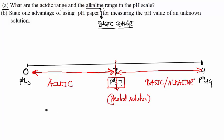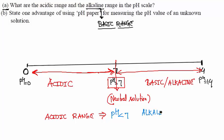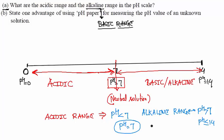So the acidic range means your pH should be less than 7. The alkaline range means pH should be greater than 7 and less than or equal to 14. And if pH equals 7, your solution is neutral.